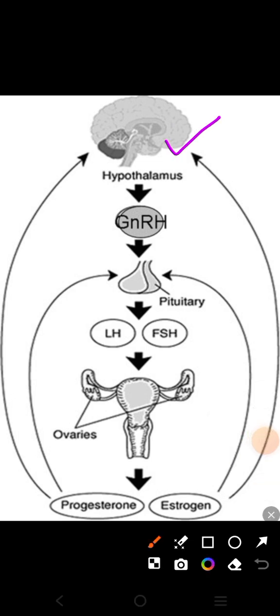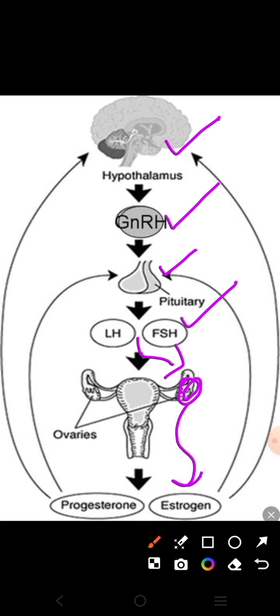As shown in the diagram, the hypothalamus releases gonadotropin releasing hormone, which influences the anterior pituitary. The anterior pituitary releases FSH and LH, which then act on the ovaries of females. FSH and LH are released in both males and females, but we are focused on the menstrual cycle in females. In response to FSH and LH, the ovaries — specifically the developing follicles inside them — release estrogen and progesterone during the monthly changes of the menstrual cycle.